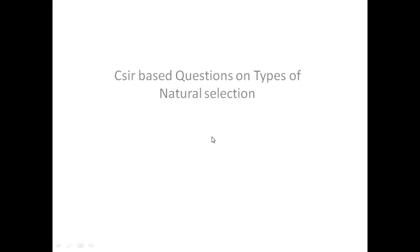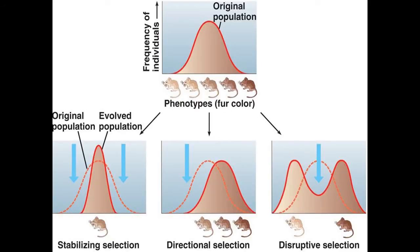Today we will discuss CSI-based questions on types of natural selection. As discussed in my previous video, there are three different kinds of natural selection: stabilizing, directional, and disruptive. In the phenotypic distribution of the original population, stabilizing selection favors intermediate phenotypes, directional selection favors one extreme end, and disruptive selection favors both extreme ends.